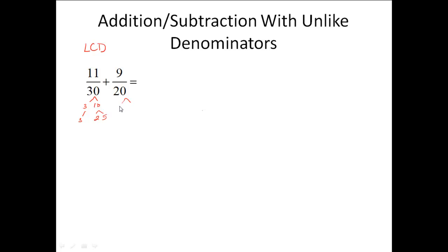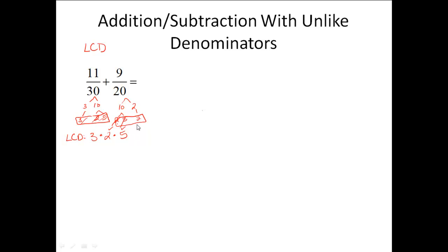Now 20 breaks down into 10 and 2, and the 10 breaks down into 2 and 5. The 2 is prime. For the least common denominator, everything has to be accounted for. From the first group I have 3 times 2 times 5. From the second group, the 2 and 5 are already accounted for, but I need a second 2. When I multiply those all together, I get 60. So the least common denominator for these two is 60.